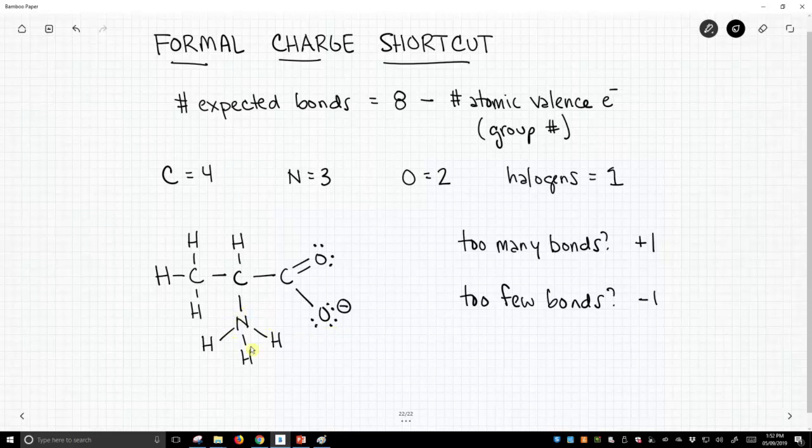And then lastly, this nitrogen. This nitrogen has four bonds. Nitrogen, we expect to make three bonds. Therefore, it has too many bonds, and it has a positive charge.